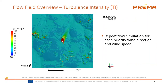An overview of the entire flow field is given here by looking at the turbulence intensity at two meters height above ground level. Very interesting flow features of the domain are highlighted. These CFD simulations are repeated for all the priority wind speeds and directions.